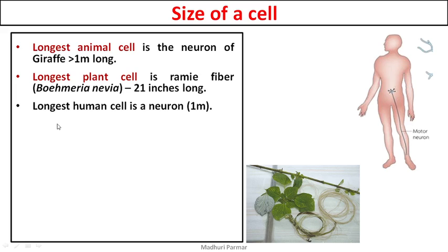The longest human cell is a neuron which is one meter long — it is a motor neuron which starts from your spinal cord. From the spinal cord, this neuron's axon extends all the way to the foot. This long neuron, one meter long, is the longest human cell.